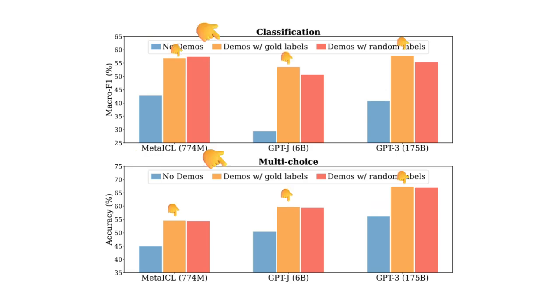However, randomizing the output label in the example barely change anything compared to having the right label. The models are still better than without example. The authors investigated further by manipulating each of these four aspects of a prompt we saw earlier.